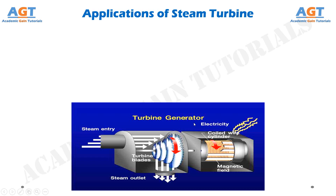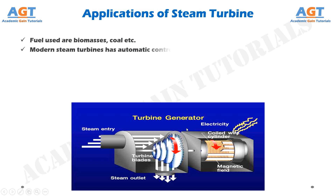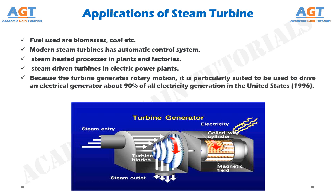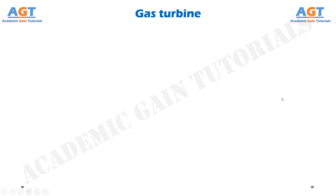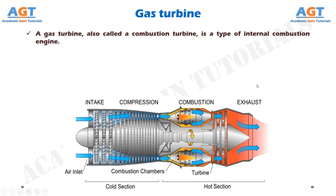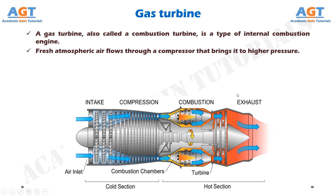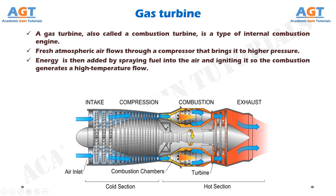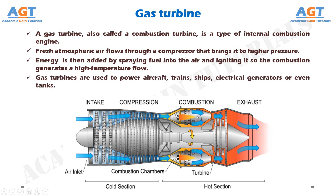Applications of the steam turbine include use of fuels such as biomass and coal, modern automatic control systems, steam-heated processes in plants and factories, and steam-driven turbines in electric power plants. Because the turbine generates rotary motion, it is particularly suited to drive an electrical generator — about 90% of all electricity generation in the United States as of 1996. A gas turbine, also called a combustion turbine, is a type of internal combustion engine. Fresh atmospheric air flows through a compressor that brings it to higher pressure, then fuel is sprayed and ignited to generate a high-temperature flow. Gas turbines are used to power aircraft, trains, ships, electrical generators, and even tanks.